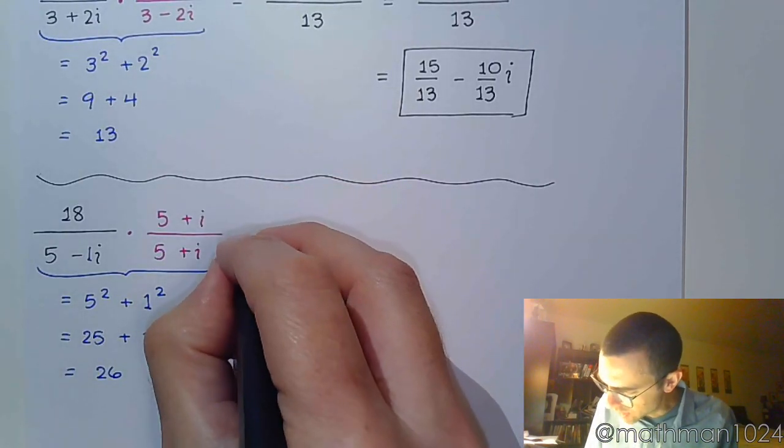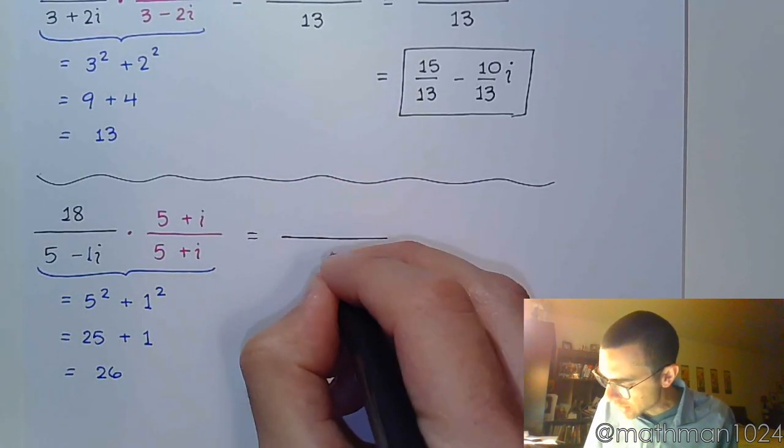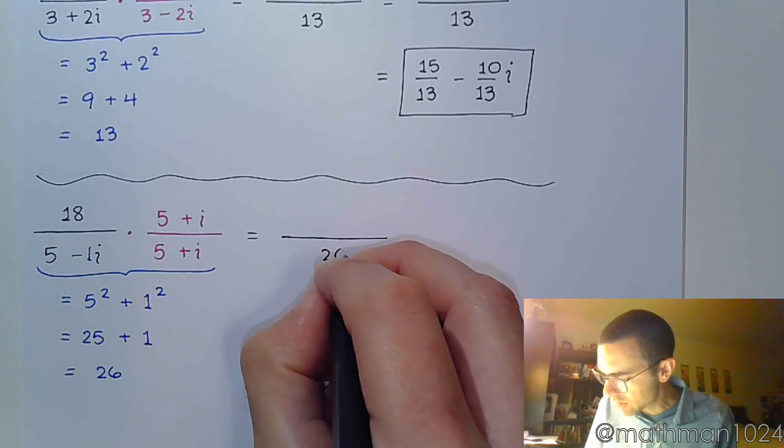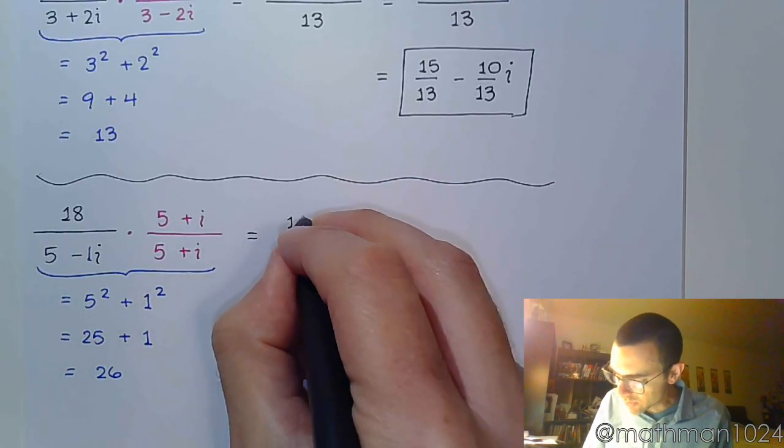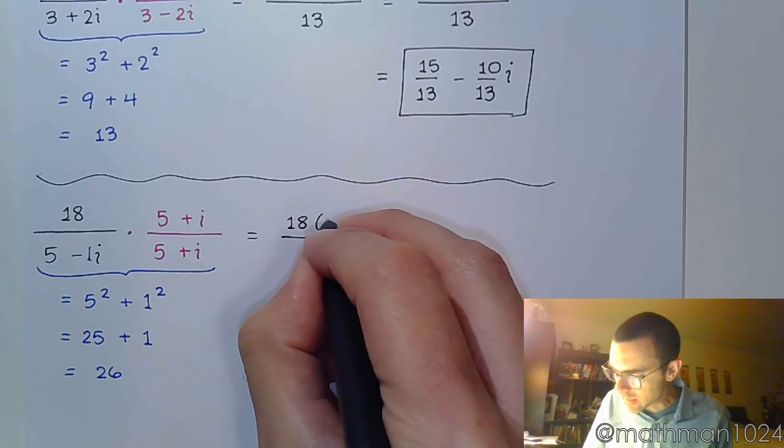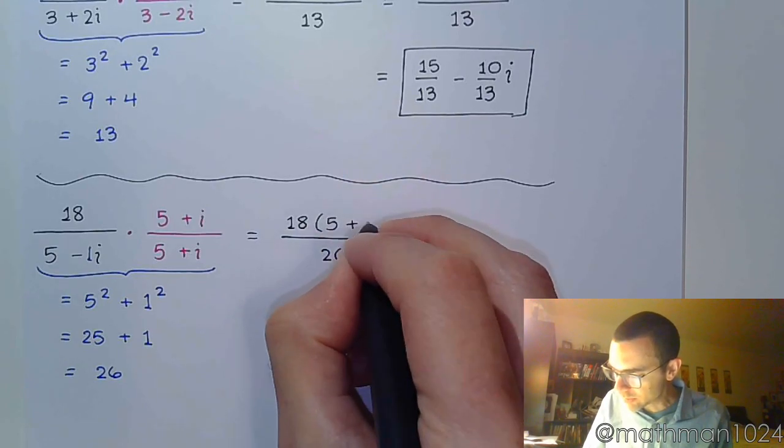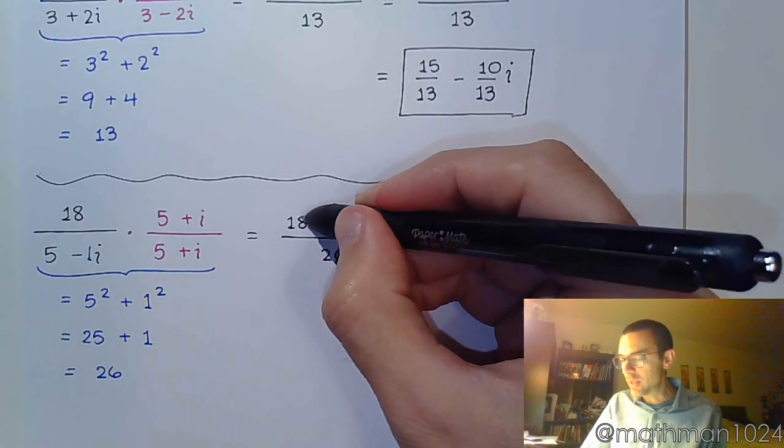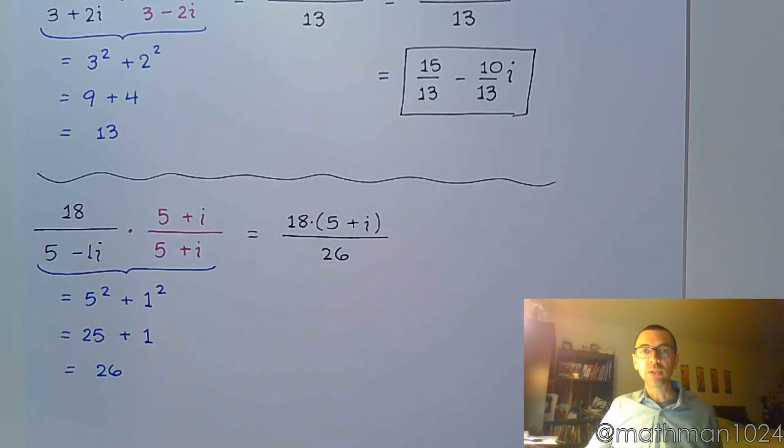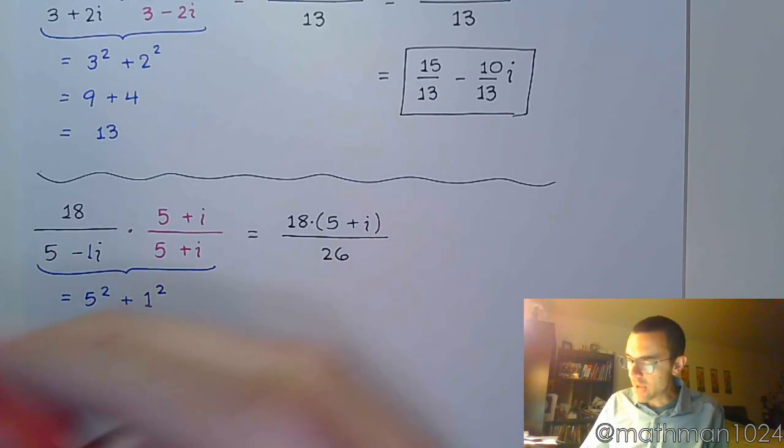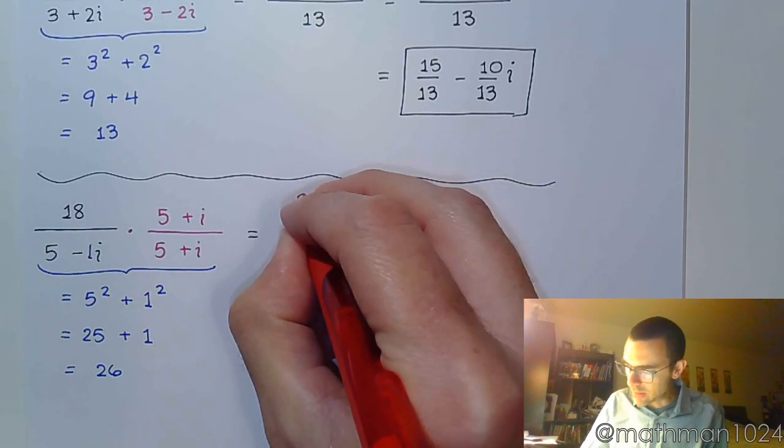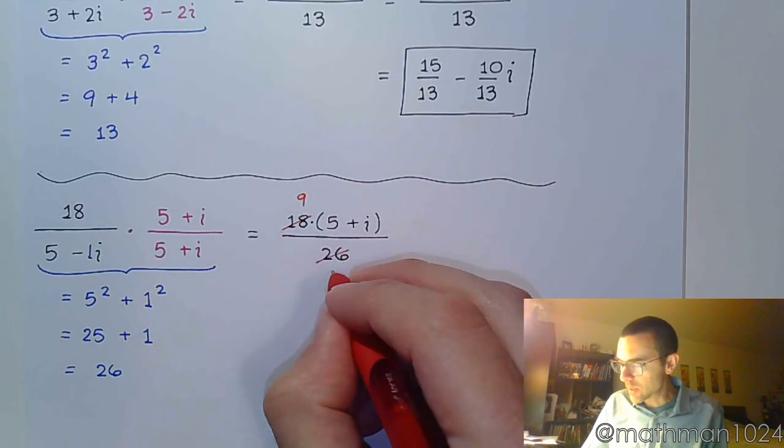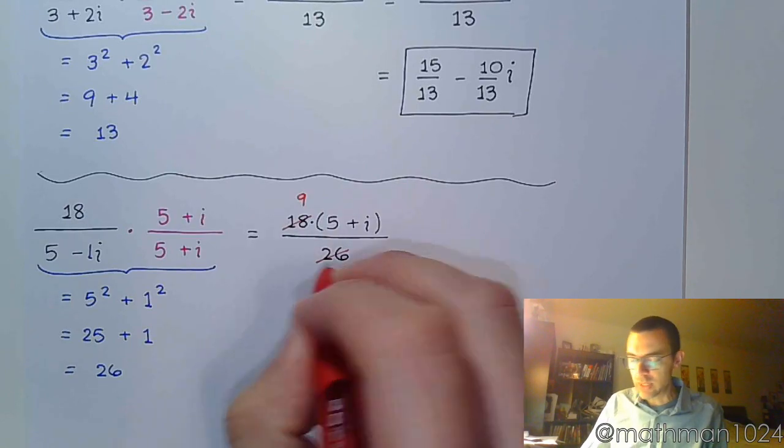So in all of this work, I now have my denominator of 26. My numerator, let's leave this factored at first, 18 times 5 plus i. And let's see if there are any common factors between 18 and that denominator of 26. And we say, yes. These guys have a common factor of 2, so I can go ahead and reduce each of these guys by that factor.